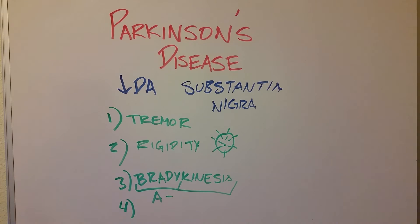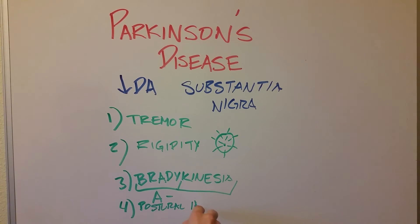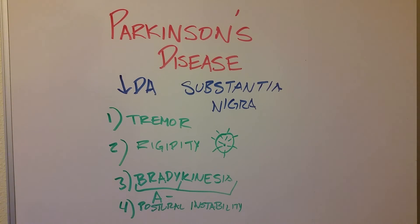The fourth cardinal symptom is postural instability. Postural refers to your posture; instability means being unstable. These people are not going to be very confident in walking or standing still. You're going to see a lot of falls, a lot of lack of balance, and a lot of imbalance issues. These are the four hallmark cardinal symptoms of Parkinson's.